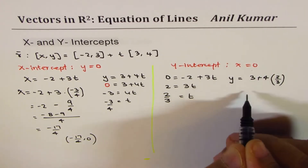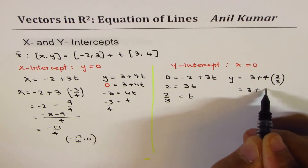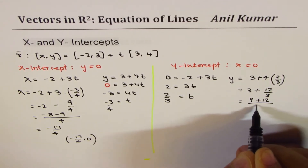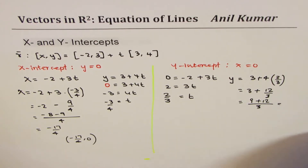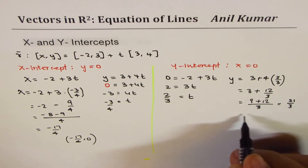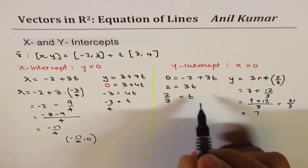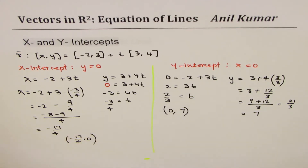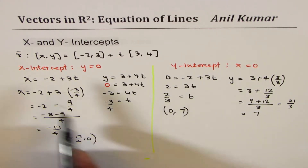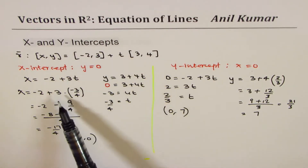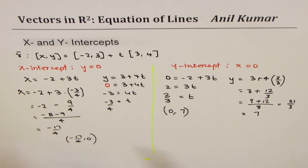That is equal to 3 plus 12 over 3, or 9 plus 12 over 3, which equals 21 over 3, which is 7. So the y-intercept is (0, 7). That is how you find x and y-intercepts when the equation is given in vector form — convert it to parametric form and proceed.